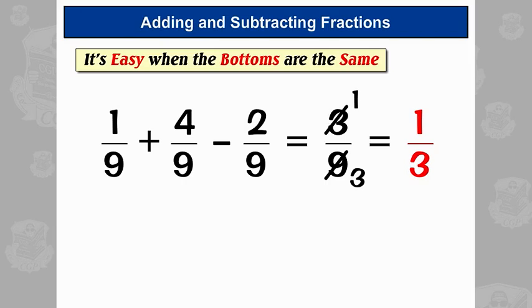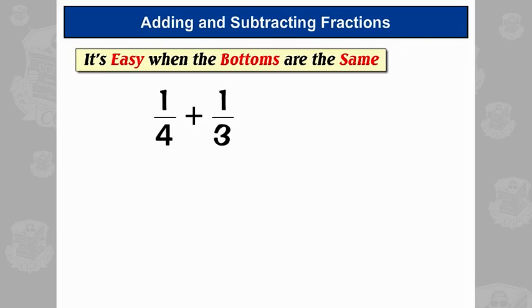All well and good, but sometimes the numbers on the bottom of the fractions won't be the same. So here we've got a quarter and a third. What are we going to do with this? Well, are we going to say that it's 1 plus 1 is 2, and 4 plus 3 is 7? No, no, no. I certainly hope you're not going to do that, because that's really disgusting. I'm going to get rid of that.